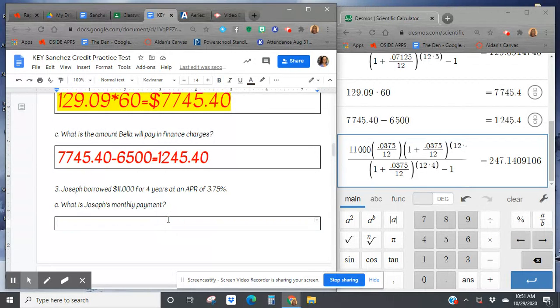So what is the monthly payment? It's $247.14. And then we'll paste in our Desmos work.